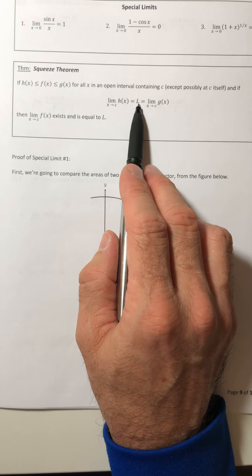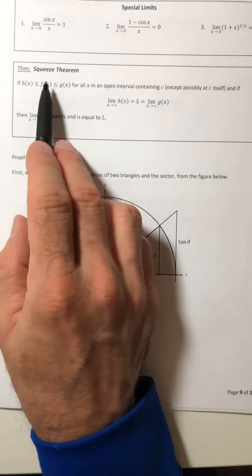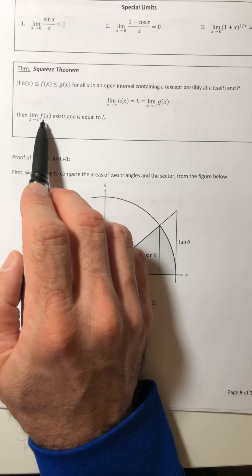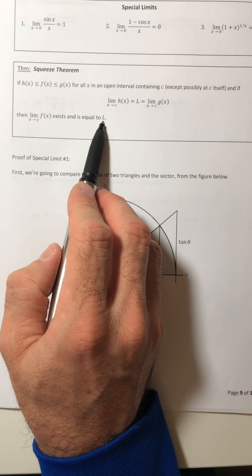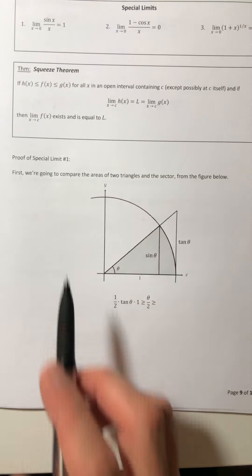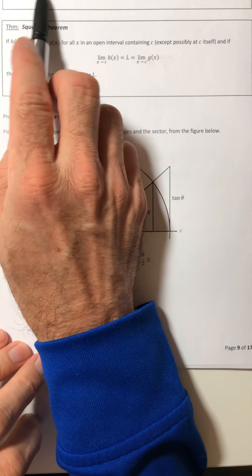So the squeeze theorem just says, okay, if you've got three functions and they're ordered like this, then if you take the limit of the smallest one and the limit of the biggest one and they equal the same thing, then the one in the middle, when you take the limit of that guy, you should also be—it should also come out the same.